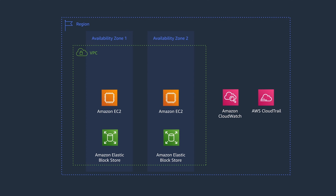Service quotas ensure that you have enough resources for your application, as well as don't overstep them. In any one region, you have five Amazon VPCs with 200 subnets. For Elastic Block Storage, or EBS volumes attached to your EC2 instances, you can set provisioned IOPS to throttle reads and writes of your data. Amazon EC2 has a limits dashboard that not only allows you to check on how many resources you're using, but also increase them if necessary.